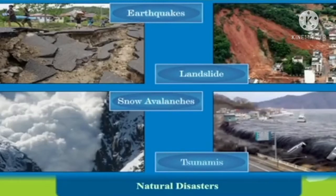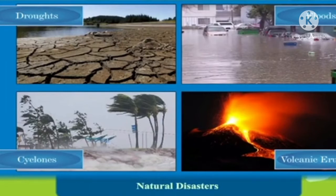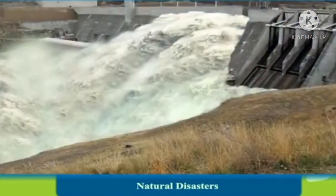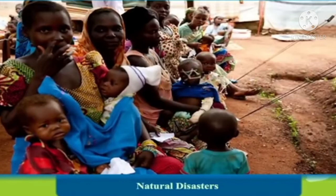Earthquakes, landslides, snow avalanches, and tsunamis all cause a lot of havoc to man. In the event of any natural disaster, it is very important that we save life and properties from serious damages. The damage caused by natural disasters — droughts, floods, cyclones, volcanic eruptions — can become more intense due to human activities. Humans can actually be evacuated before these disasters happen and taken to other places.